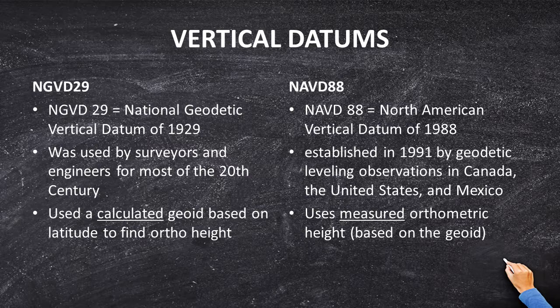The 1929 datum is a fantastic datum, but it is very outdated. Studies have shown that this datum does not represent sea level or flood level very well at all, because it uses a calculated geoid. On the other hand, the 1988 datum uses a measured orthometric height based on the geoid, and it also includes many new measurements. So in sum, the newest datum — NAVD 88 — is the newest and best datum to use, and therefore should be the one used on your flood certificate. In fact, many state boards require you to use this one on your flood certificate.